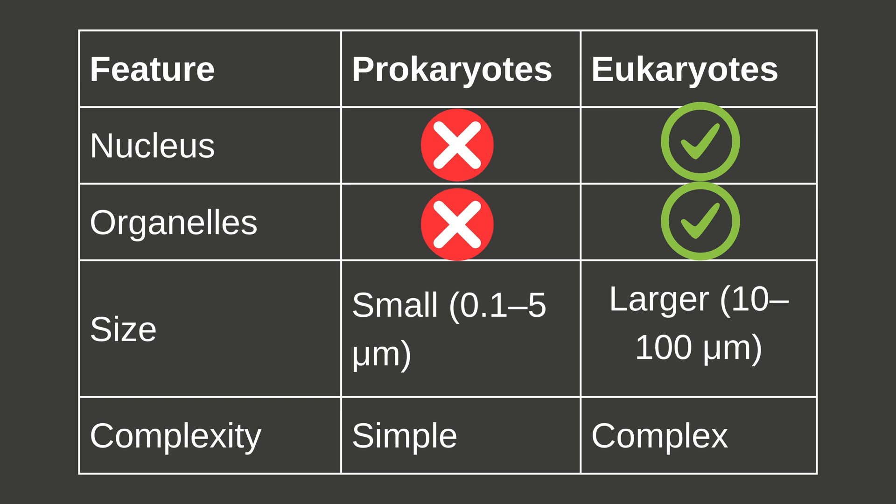Here's a quick way to remember. Prokaryotic cells do not have a nucleus or organelles. They are small — 0.1 to 5 micrometers — simple, and can be found in bacteria and archaea. Eukaryotic cells do have a nucleus and many organelles. They are larger — 10 to 100 micrometers — more complex, and can be found in plants, animals, and more. Easy, right?